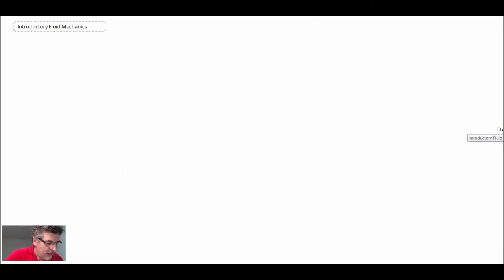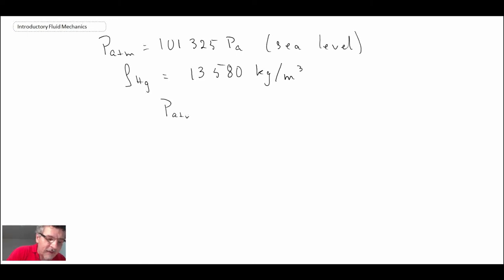Now taking a look at typical values, let's say we have P atmosphere equals 101,325 pascals, and that would be at sea level. And knowing the density of mercury at room temperature, 13,580 kilograms per meter cubed, we can go to our equation P atmosphere equals rho Hg g h.